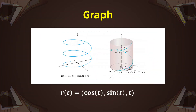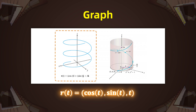Let's see an example with its graph. In this case, the vector-valued function r equals a vector in R3. The components are cosine of t, sine of t, and t. Notice that t can be any real number because the domain of each of the components is the set of real numbers. Since this vector-valued function lives in R3, we can graph the set of outputs of this function. When we do, we obtain a helix.